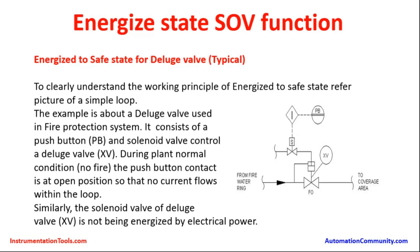The valves are placed near pumps, near vessels, and wherever there is a possibility of fire happening — to quench the fire, these valves will be operated. The outlet of this valve goes to the coverage area. The D-Ledge valve is mainly used for fire protection across industries and plants.